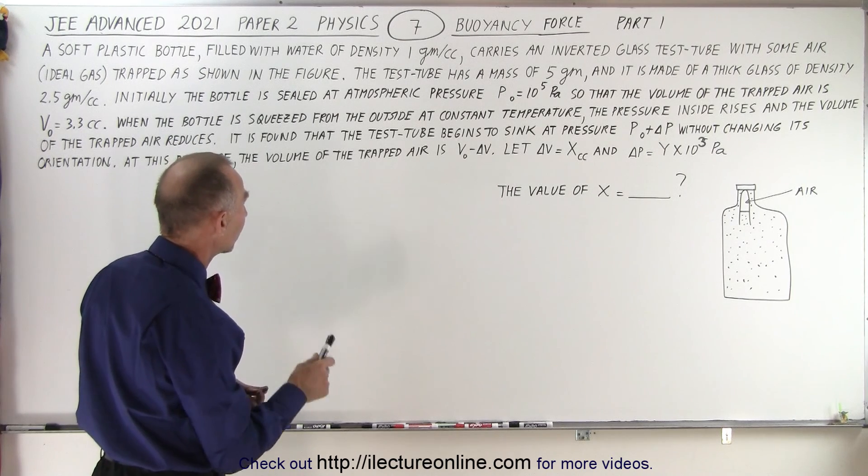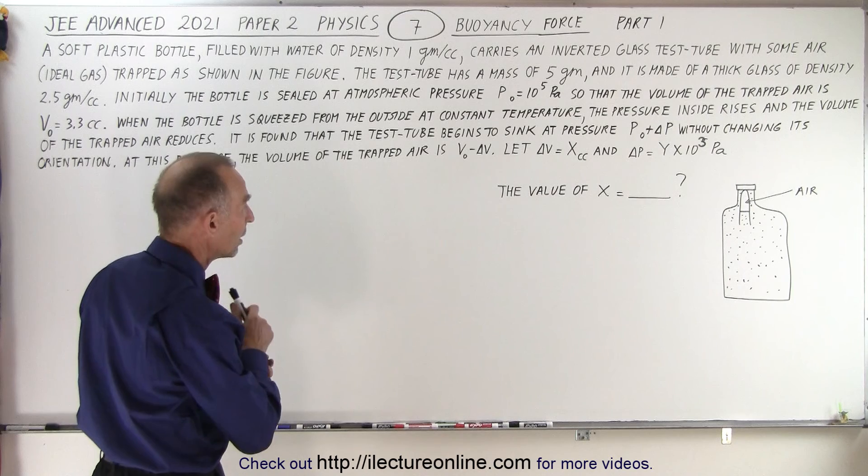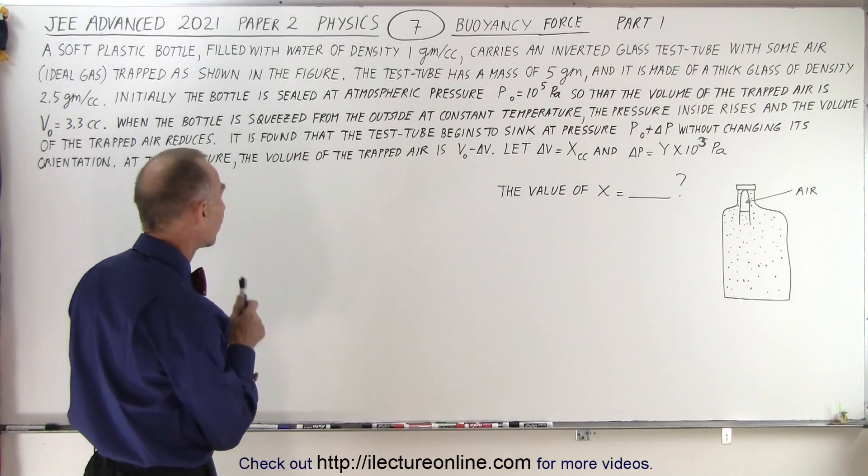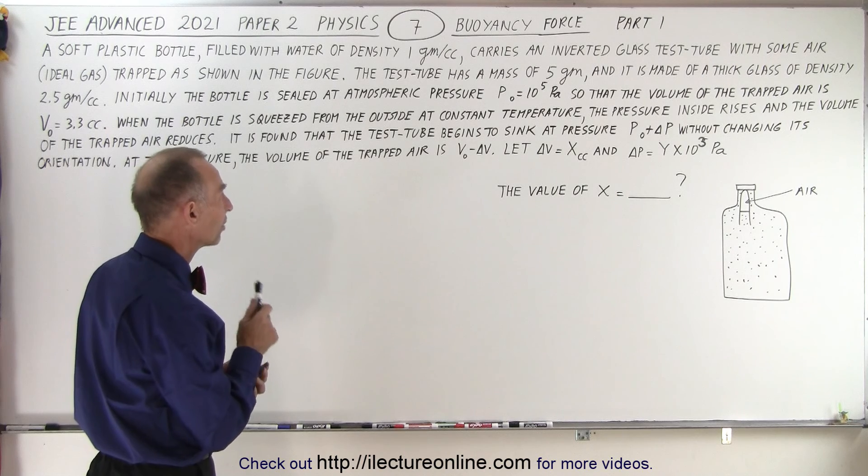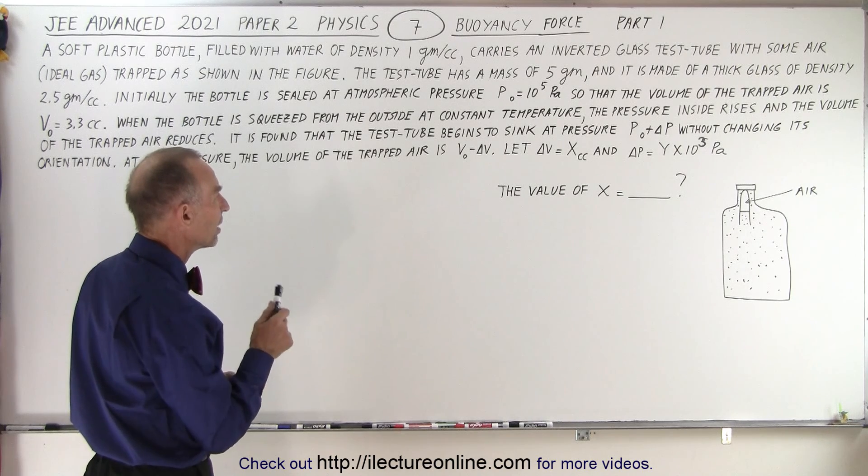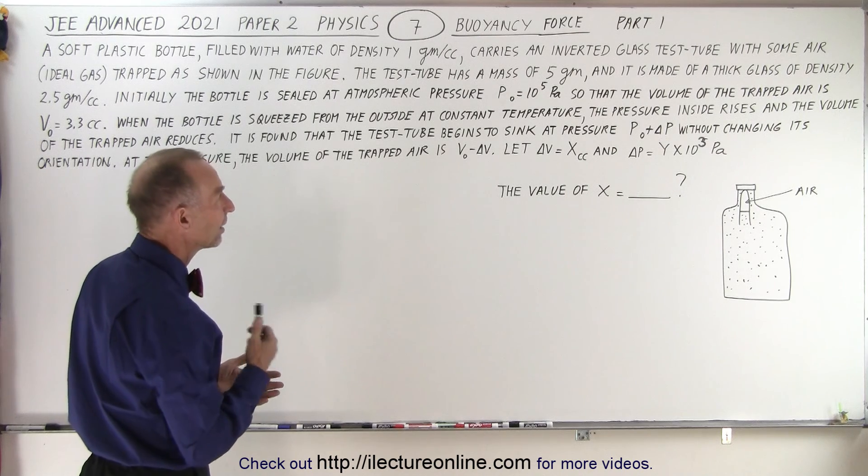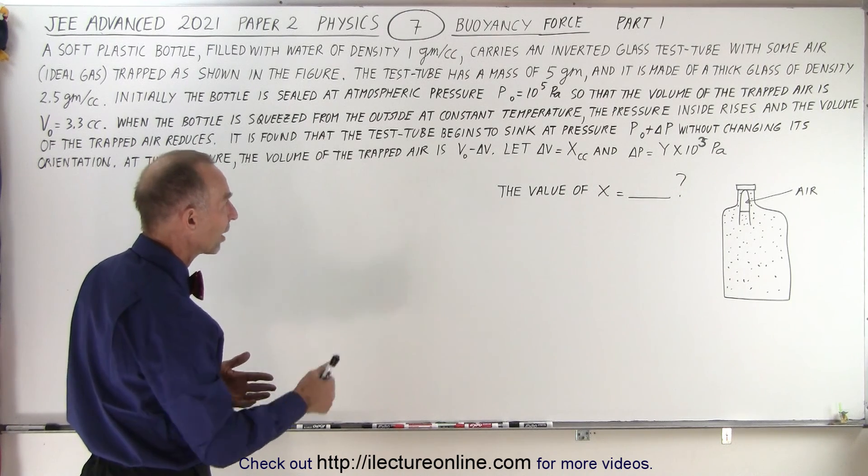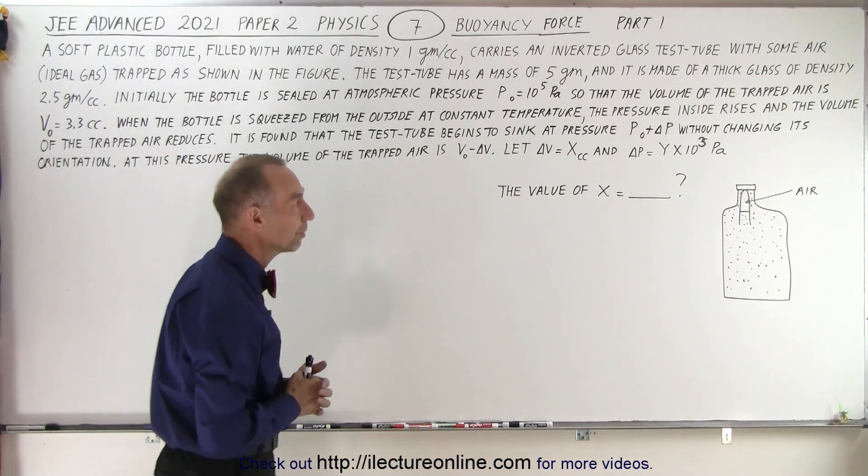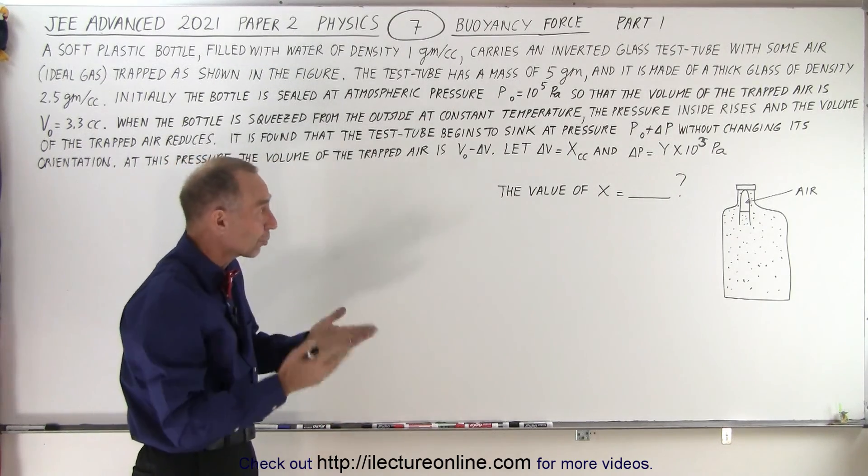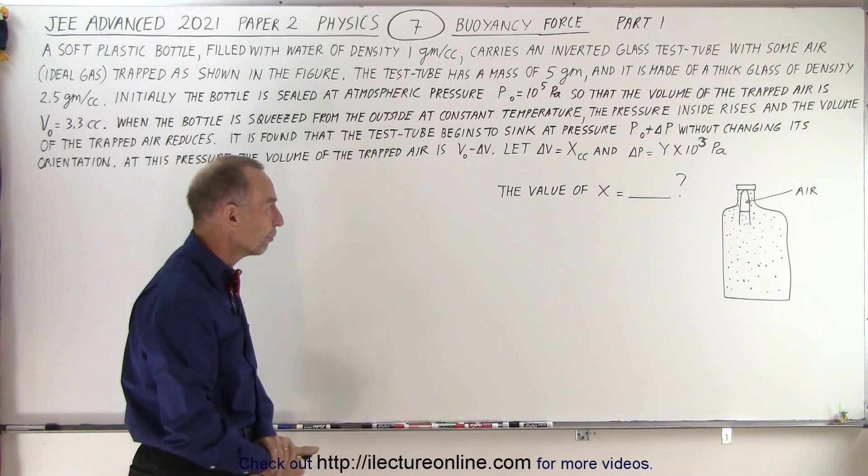It is found that the test tube begins to sink at pressure p plus delta p without changing its orientation. At this pressure, the volume of the trapped air is v minus delta v. Let delta v equals x in cubic centimeters and delta p equals y times 10 to the fifth Pascals. Find the value of x. So that's part one, we need to find the value of x and then part two will find the value of y.